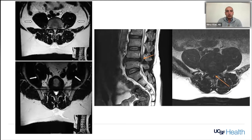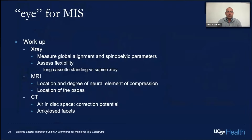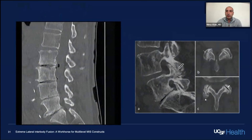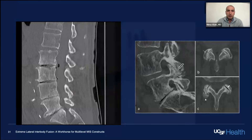Look at the CT — any opportunity for correction through the disc space will manifest as air in that space. These will respond very favorably to distraction across the space, and your correction in the sagittal and coronal plane will come from that. If you have fused facets, you might want to release them by dropping a tube in to maximize your corrective potential.